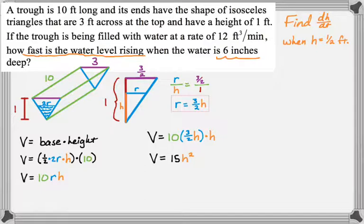And this will simplify to just 15h squared. I'm looking for dh/dt, so at this point, I should take a derivative. So, I'm going to say dV/dt is 30h, and then by the chain rule, dh/dt. If you forget the chain rule there, you won't have the thing you're trying to solve for.